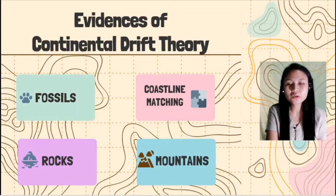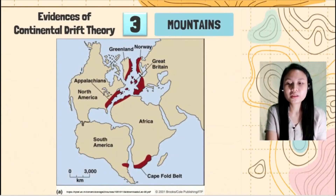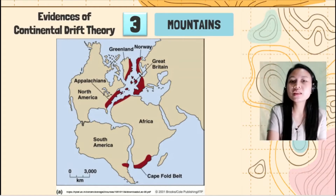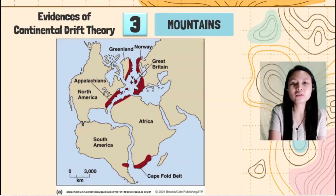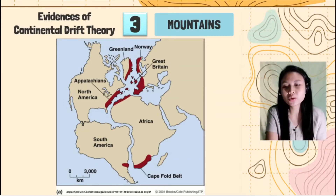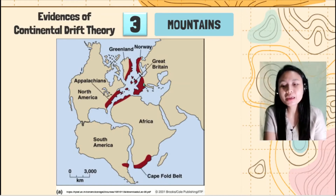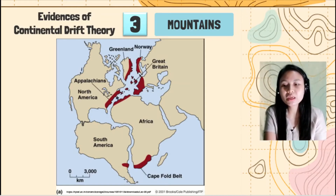Now we have here the mountains. The mountains across the continents seem to be one that had drifted because of the drifting of the continents. So we have mountains in North America, in Africa, in Greenland, Norway, part of Europe, and also Great Britain — they seem to be fitted with each other.